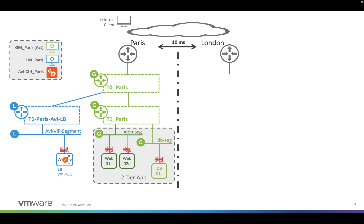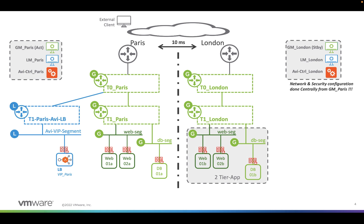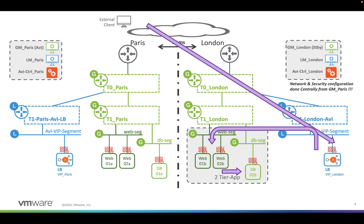I then add a load balancer for this application behind Tier-1 Paris, dedicated on a specific segment. Everyone from the outside can reach the VIP Paris to access the two-tier app. In London, I do the same. I have a GM London — which is standby — a local manager for London, and an AVI controller for London. I deploy from the GM Paris active the same topology in London, including a VIP in London that load-balances the two-tier application physically in London.